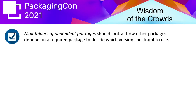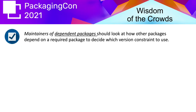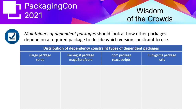Since there is still a proportion of packages that are not necessarily semantic versioning compliant, if you as a maintainer want to depend on some package, how do you know whether it's safe to trust that package and choose the best dependency constraint? To address this, we propose relying on the wisdom of the crowds — looking at how the different types of dependency constraints used by existing dependents of a particular package are distributed.